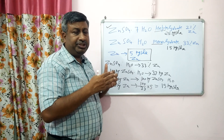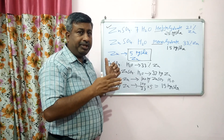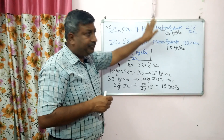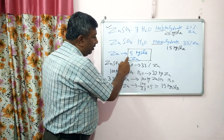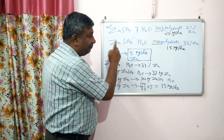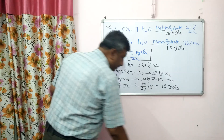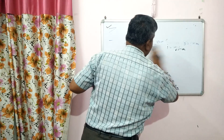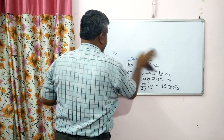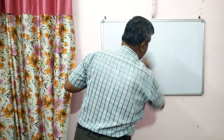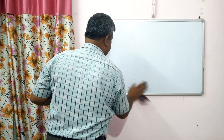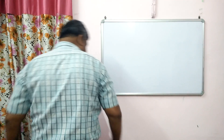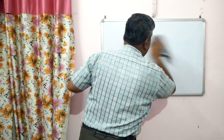Zinc and phosphorus have an antagonistic effect — excess zinc can reduce phosphorus availability and vice versa. The major important point is that the application rate is 5 kg zinc per hectare. This is the case for zinc sulphate fertilizer: 5 kg per hectare of elemental zinc.